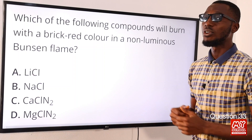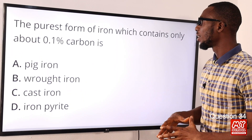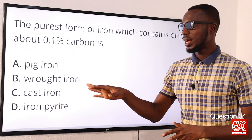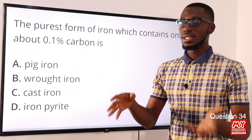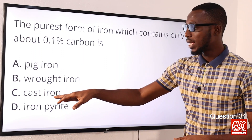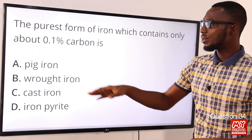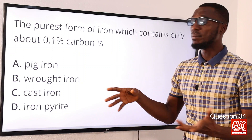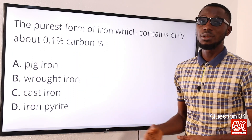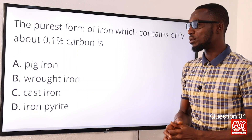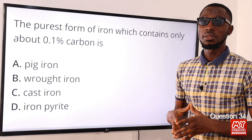Question 34: The purest form of iron, which contains only about 0.1% carbon, is wrought iron. Pig iron is gotten directly from the blast furnace. Cast iron is obtained from pig iron and is used to make cookers and stoves. Wrought iron is gotten from cast iron and can be used to make chains, nails, and horseshoes. The correct option is option B for wrought iron.